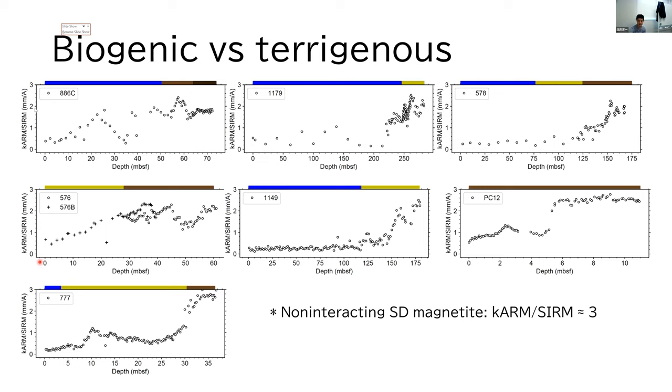Magnetostatic interactions and larger grain size would reduce the value. All examined sites show a very high value up to 2.5 or 2.7,